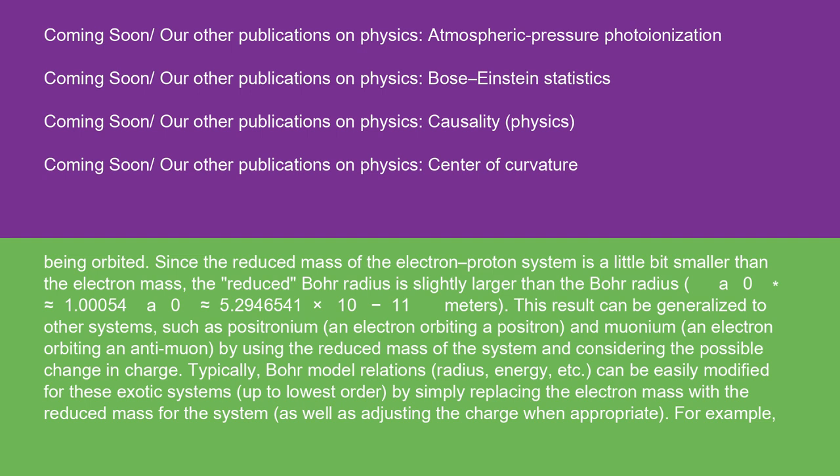This result can be generalized to other systems, such as positronium, an electron orbiting a positron, and muonium, an electron orbiting an antimuon, by using the reduced mass of the system and considering the possible change in charge.